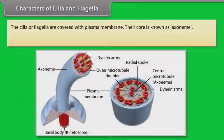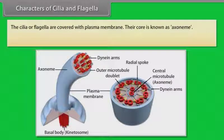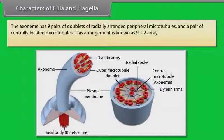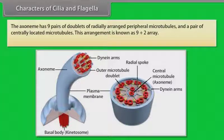The cilia or flagella are covered with plasma membrane. Their core is known as the axoneme. The axoneme possesses a number of microtubules running parallel to the long axis. The axoneme has nine pairs of doublets of radially arranged peripheral microtubules and a pair of centrally located microtubules. This arrangement is known as the 9+2 array.